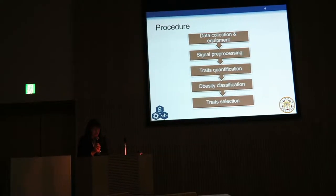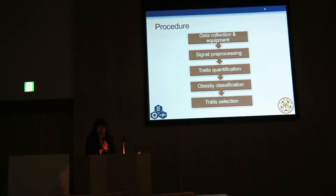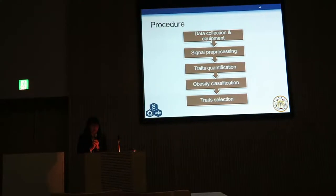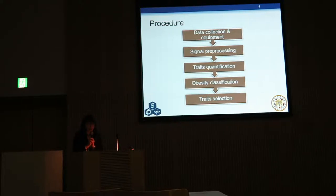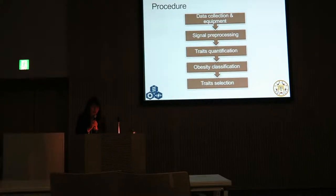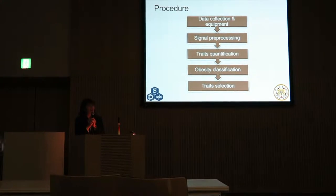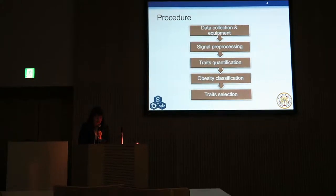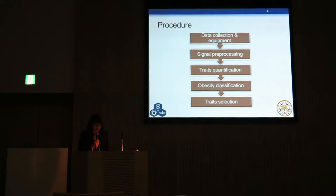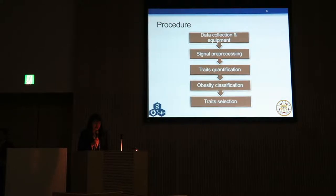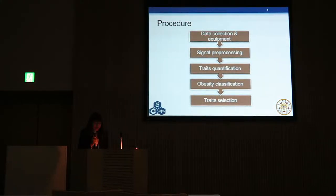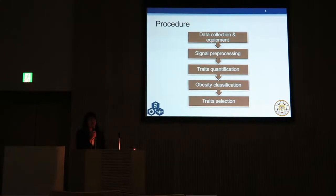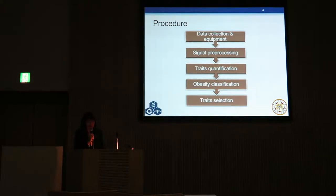Here's my procedure. In this flowchart, you can see I'll introduce the data collection and equipment first, then the signal preprocessing method, then I'll show how I quantify the traits to describe the properties of my data, and then I'll do the classification method to differentiate obese cats and non-obese cats, and finally trait selection to figure out the critical properties.